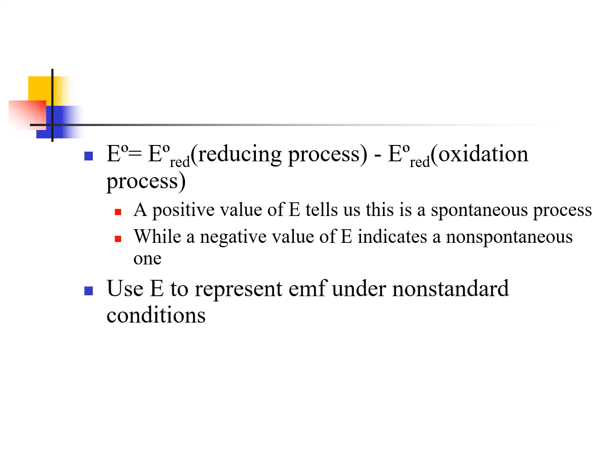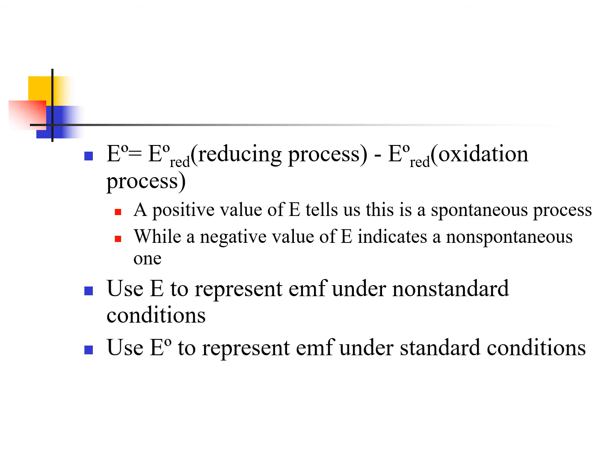Why would we do this? Finding an equilibrium constant like K experimentally is very hard to measure, but voltage is measured pretty easily. So this would be an easier experiment to run using voltage than measuring concentrations with a colorimeter.